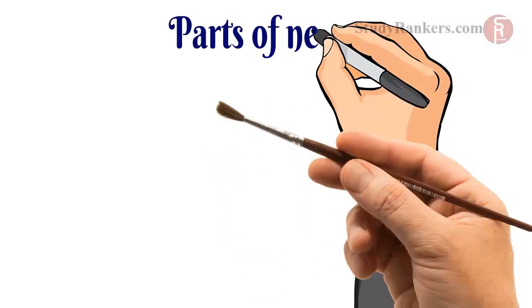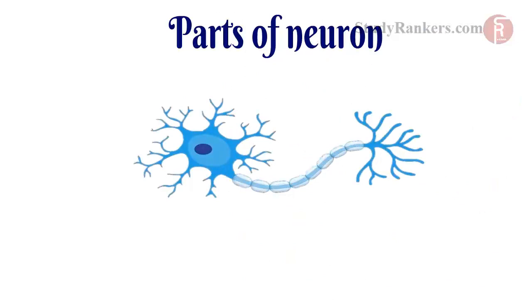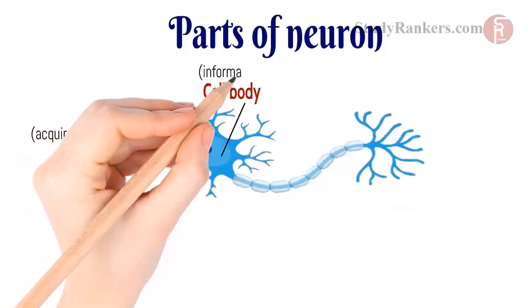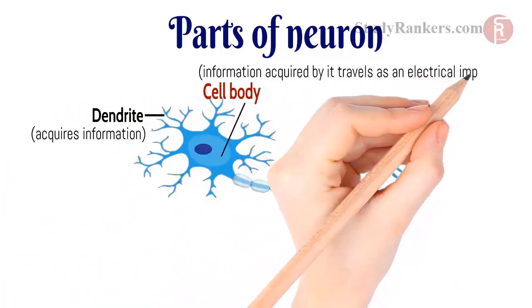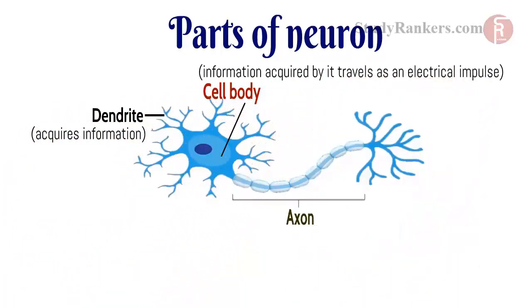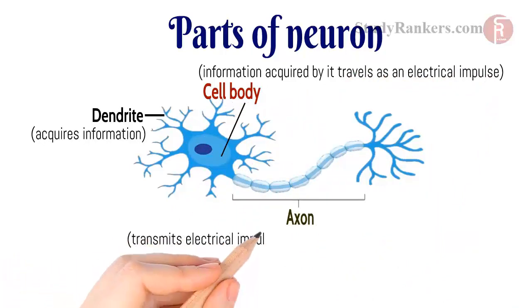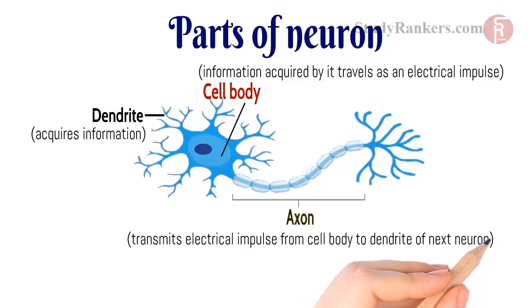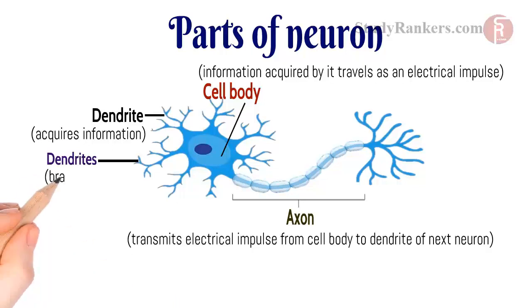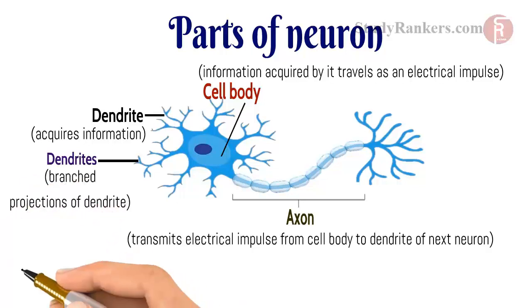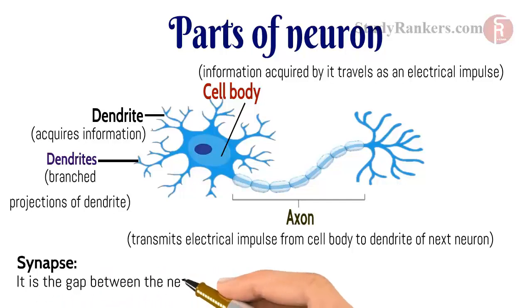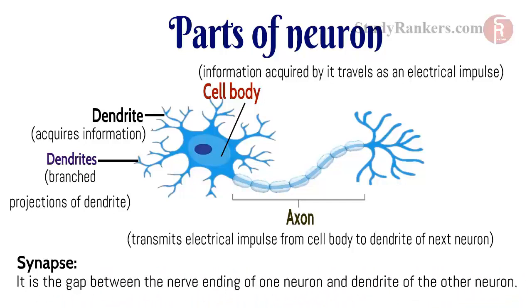We are going to study about the parts of a neuron. Each neuron consists of three parts: dendrite, which acquires information; cell body, through which the information travels as an electrical impulse; and axon, which transmits the electrical impulse from the cell body to the dendrite of the next neuron. Other parts include dendrites, which are branch projections, and synapse, which is the gap between the nerve ending of one neuron and the dendrite of the other neuron.